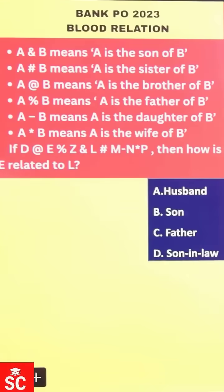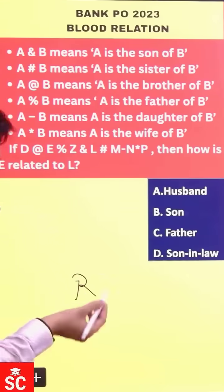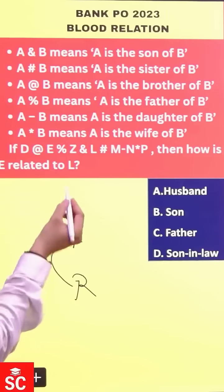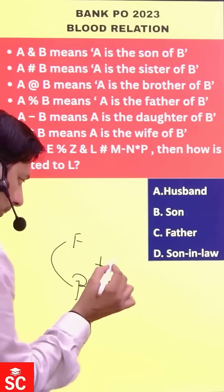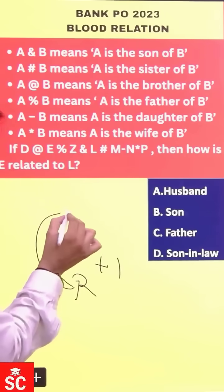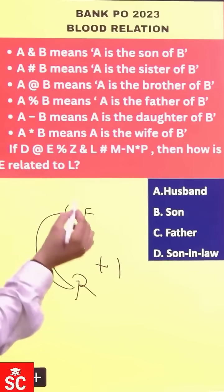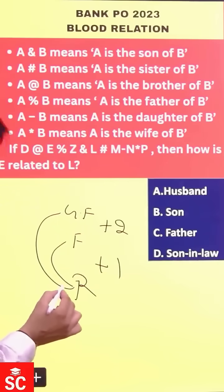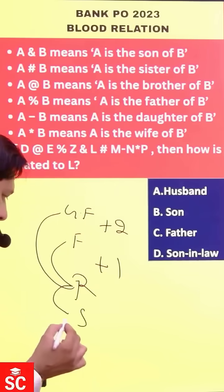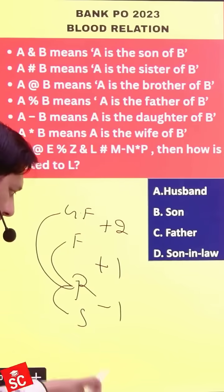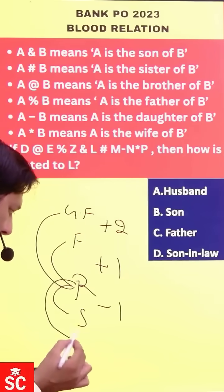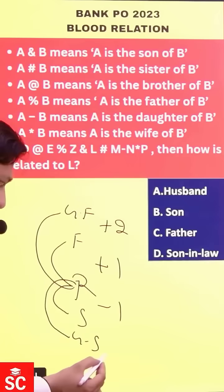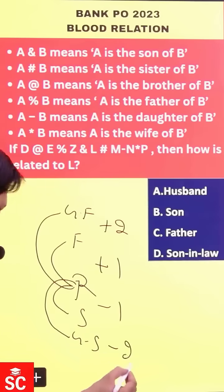Imagine a person named Ram. If you talk about Ram's father, we are moving one generation up, so plus one. If you talk about Ram's grandfather, we are moving two generations up, so plus two. On the other hand, if we talk about Ram's son, we are moving one generation down, so minus one. If we talk about Ram's grandson, we are moving two generations down, so minus two.